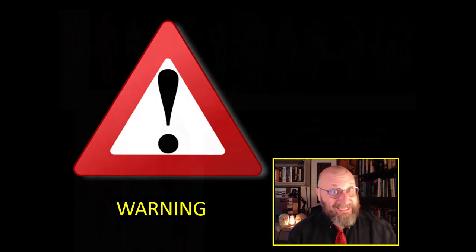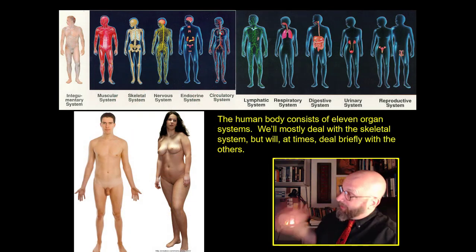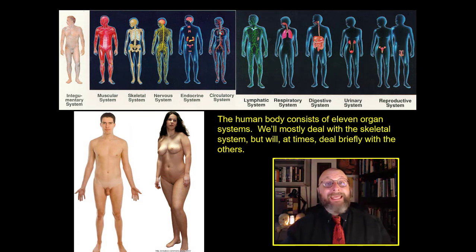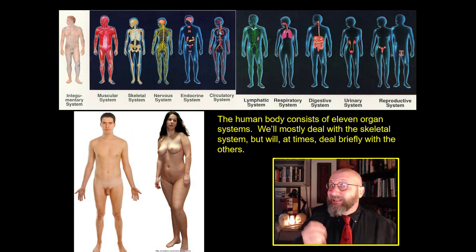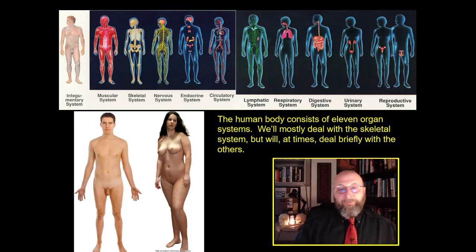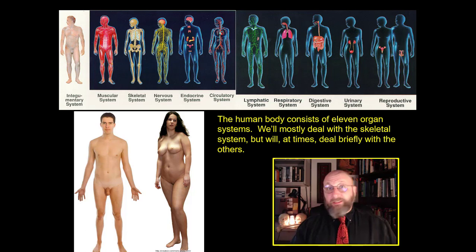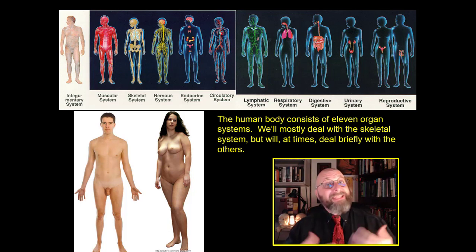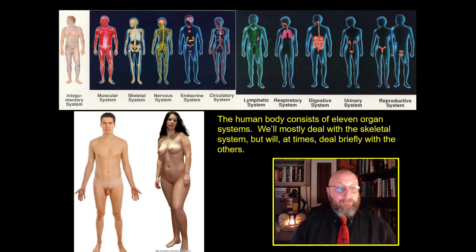So what exactly is the human physical form? That is the human body there on the lower left. The human body can be classified as possessing 11 different organ systems, and that's them across the top. Physical anthropology addresses all of these, although it mostly focuses on skeletal anatomy. So before we get into that, let's actually talk about the 11 organ systems of the human body.